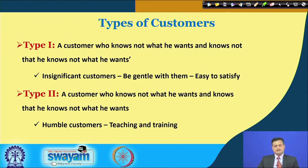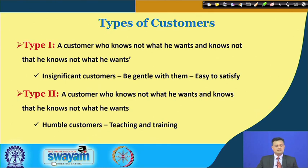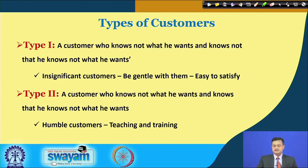Type 2 is a customer who knows not what he wants but knows that he knows not what he wants. This is a slightly more knowledgeable customer, but we need to tackle them differently. These are called humble customers, and teaching and training is required so they can be upgraded about product features and appreciate the offerings.